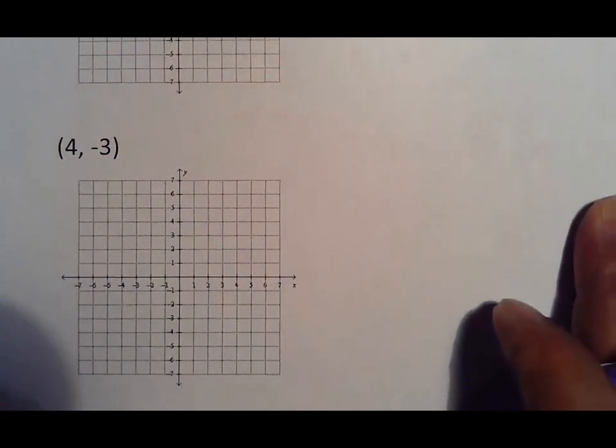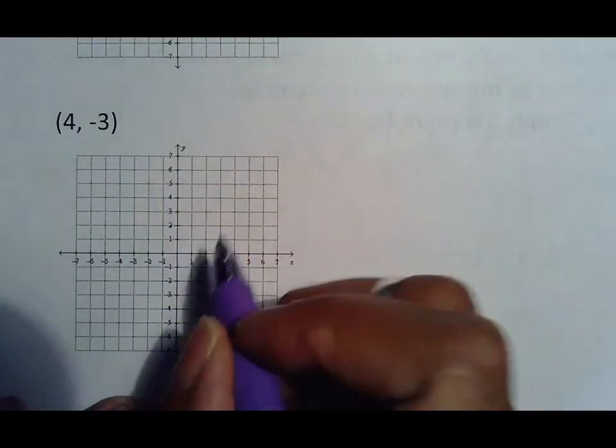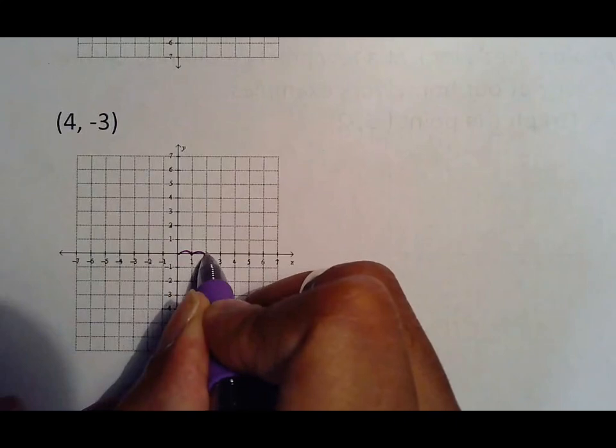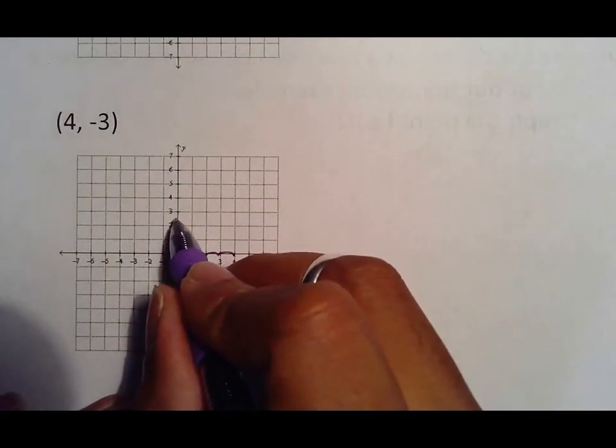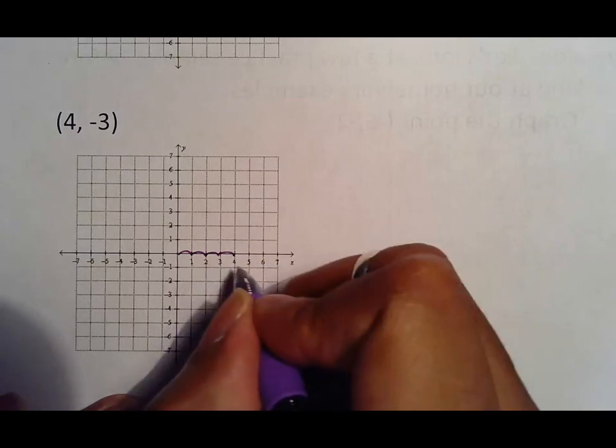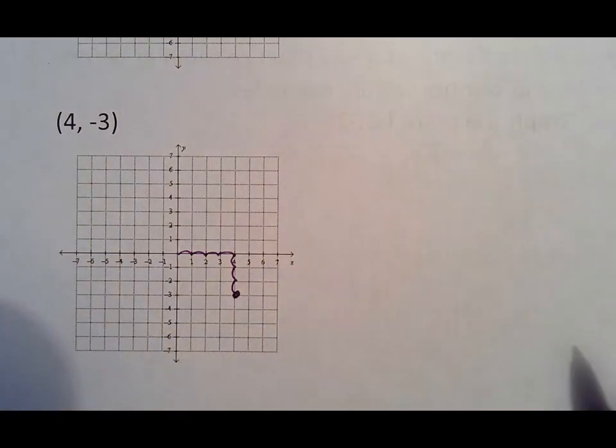We then did (4,-3) on the second day that we dealt with the Cartesian plane. Again the 4 meant go forward 4: 1, 2, 3, 4. But then the negative 3 meant don't go up 3 because notice that's positive. You want to go down to negative 3 so you go 1, 2, 3 which is right there.